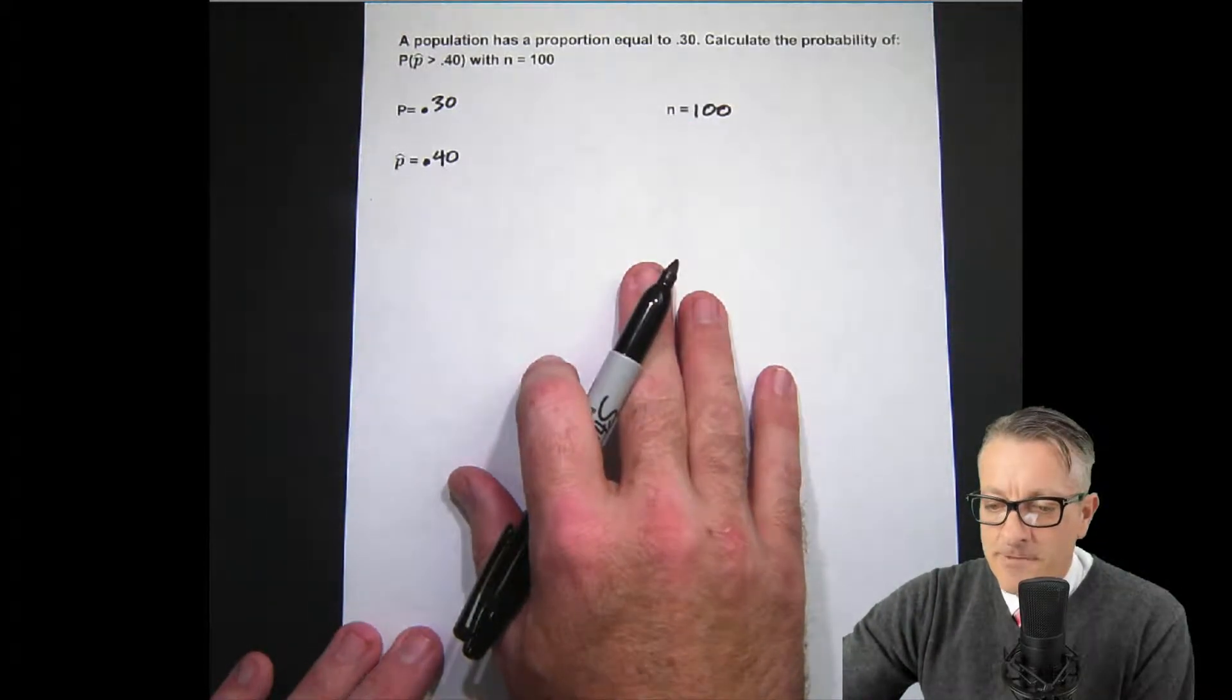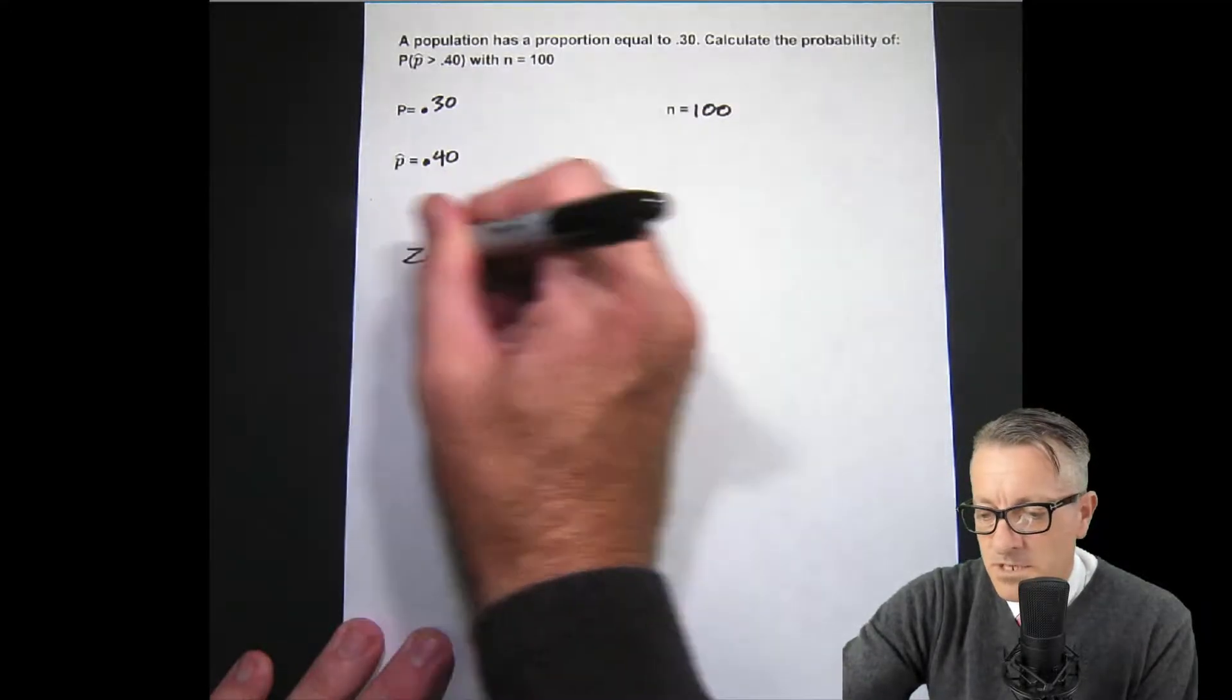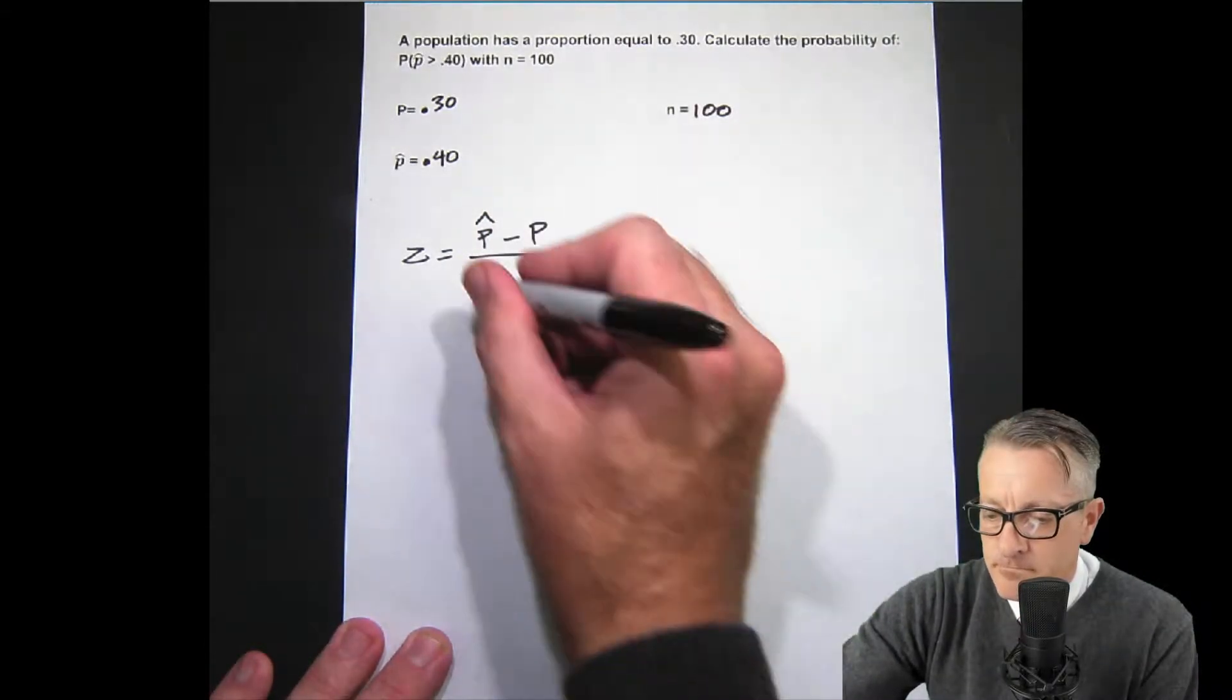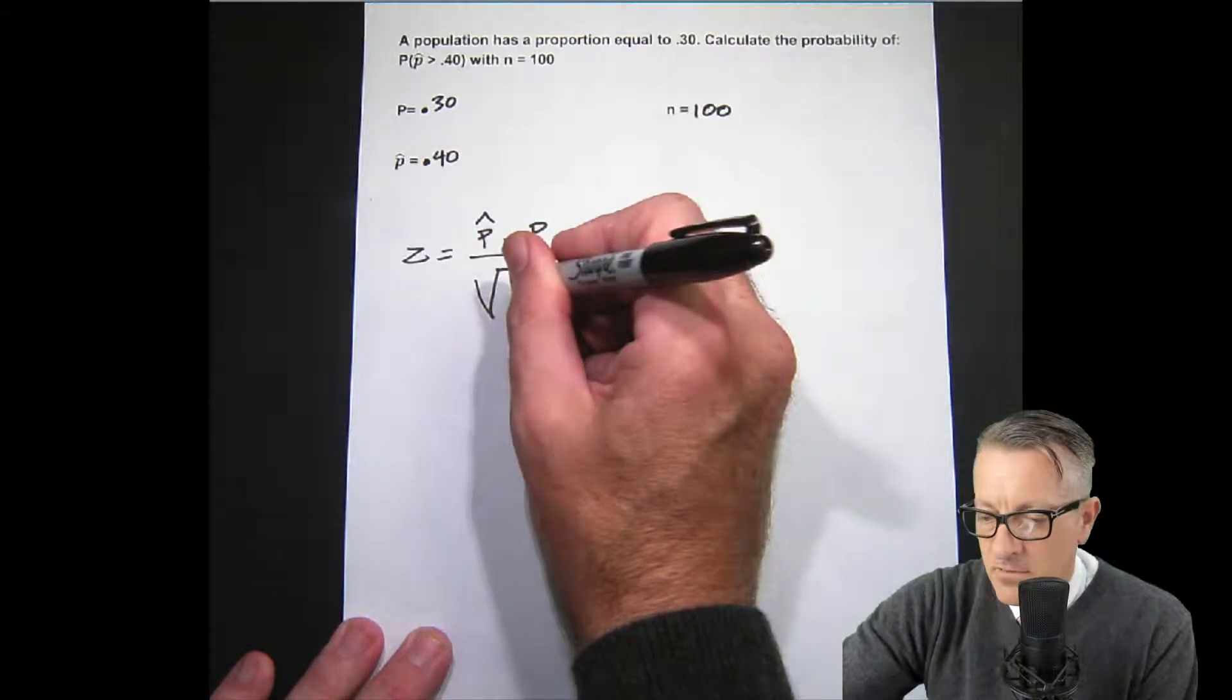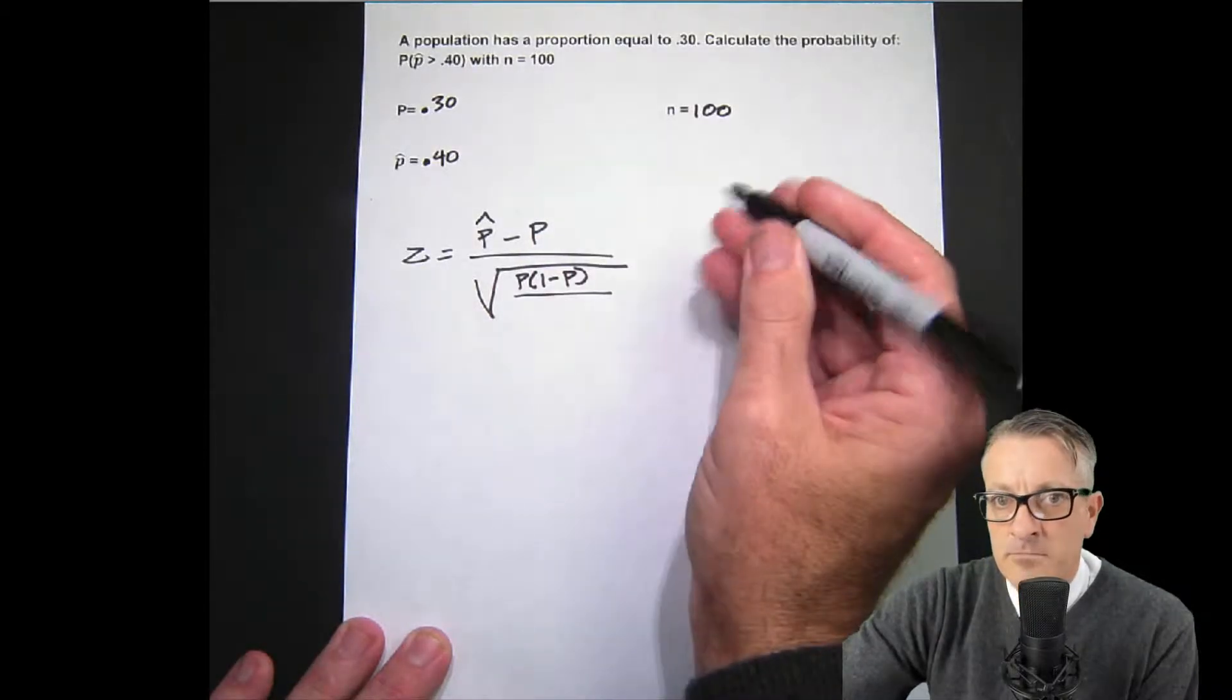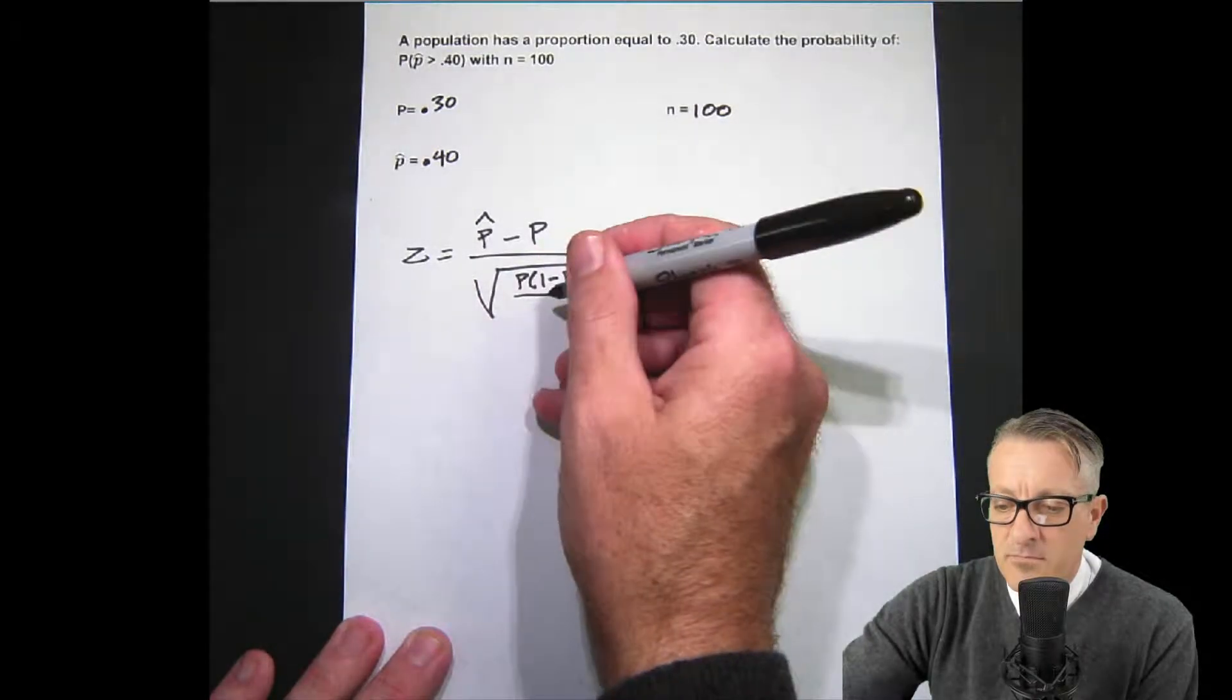Now what formula are we going to use? Z equals P hat, which is our sample proportion, subtract population proportion. I'll go kind of quick on some of this because I already have it calculated out. So we have population P times 1 minus population P, which in the binomial calculations we call the Q or the opposite of success, the failure, and then the n.